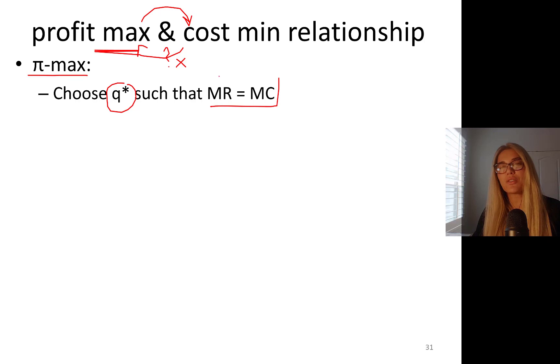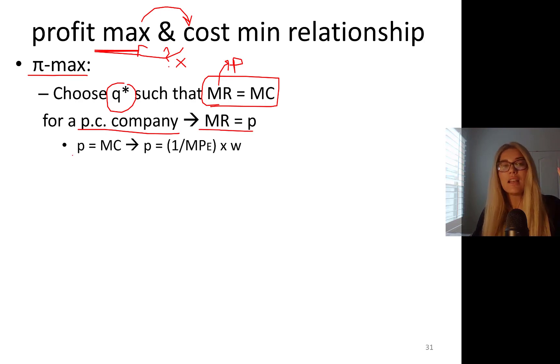We talked about perfectly competitive companies where price equals marginal cost. As a result, for a perfectly competitive company, marginal revenue equals price. We're trying to do price equals marginal cost, and as a result we got this result: price equals 1 over marginal product of labor times the wage rate.